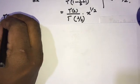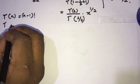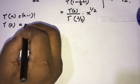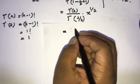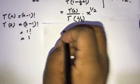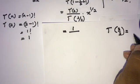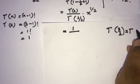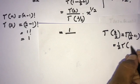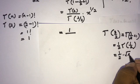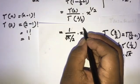We know that gamma of n equals (n minus 1) factorial. So gamma of 2 equals (2 minus 1) factorial, which is 1 factorial, equal to 1. For gamma of three halves, we use the identity that gamma of three halves equals one half times gamma of one half, and gamma of one half equals square root of pi. So gamma of three halves equals one half times square root of pi.